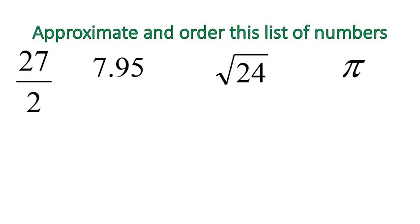We're going to take this list of four numbers and approximate them and put them in order. To do that, we need to make all of them into decimals. So 27 over 2 means 27 divided by 2, and that will give us 13.5. 7.95 is already listed as a decimal, so we'll just write that one down.